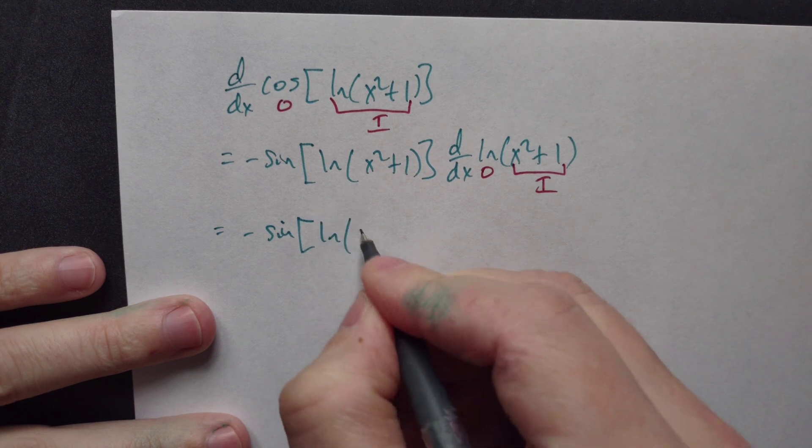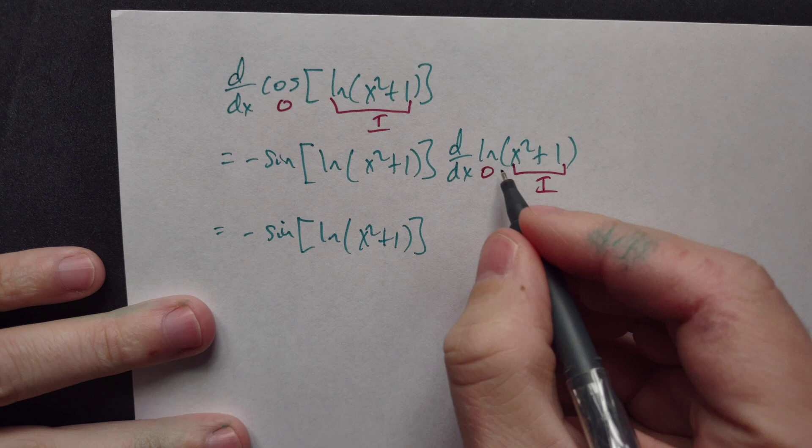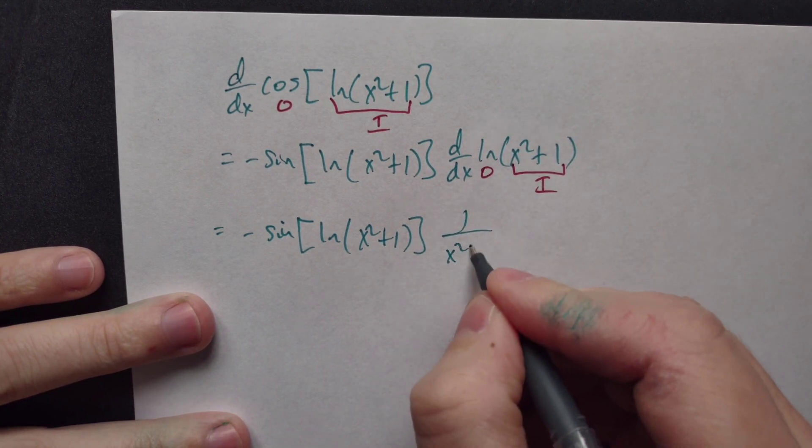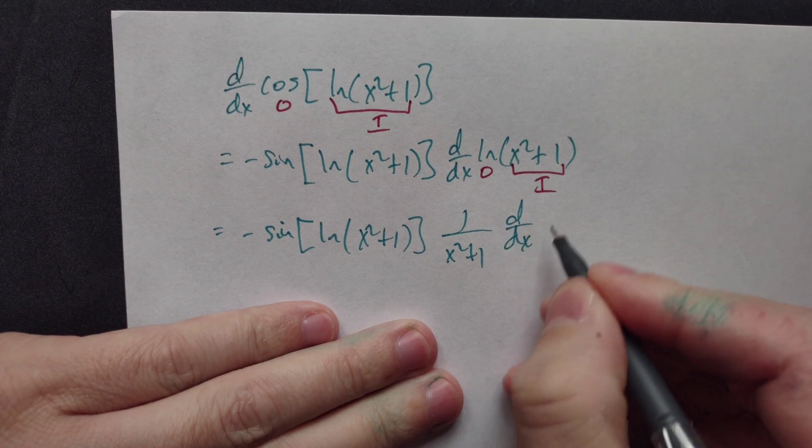So the derivative of ln is one over that inside, which is x squared plus one. And then you multiply again by the derivative of that inside, which is the x squared plus one right here.